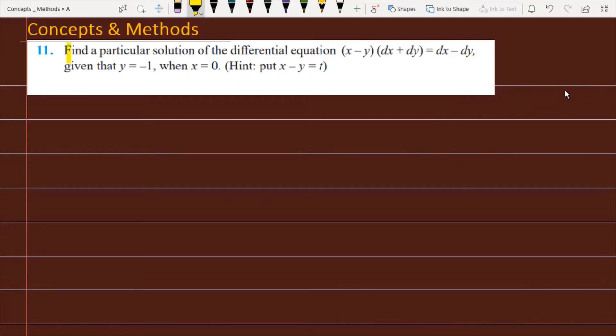The question is find a particular solution of the differential equation (x-y)(dx+dy) = dx-dy given that y = -1 when x = 0.